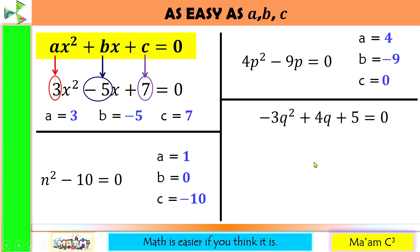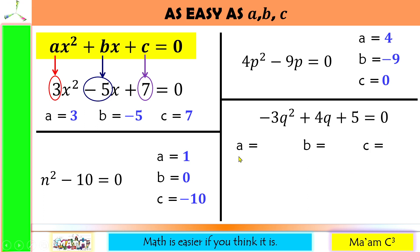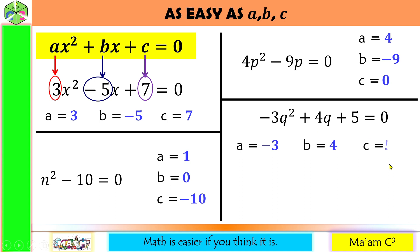Last one: negative 3q squared plus 4q plus 5 equals 0. This is already in standard form. So let us determine a, b, and c. A is the numerical coefficient of the variable raised to the second power — that would be negative 3. B is the numerical coefficient of the variable raised to the first power — that would be 4. And c is the constant — so we have 5.